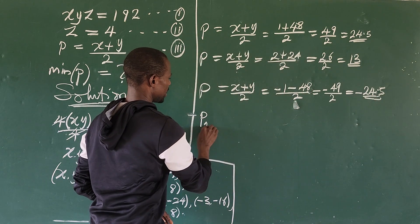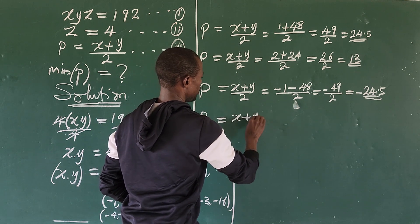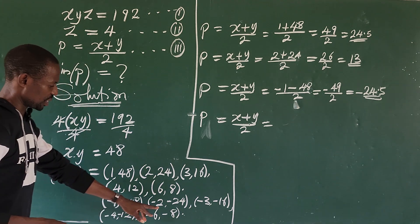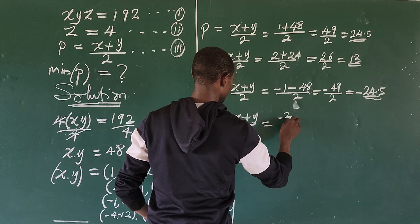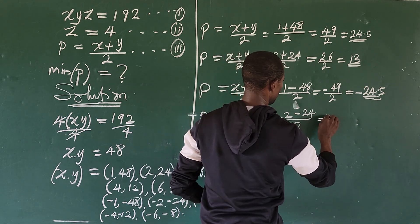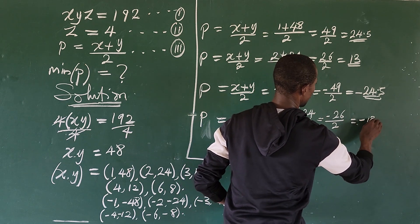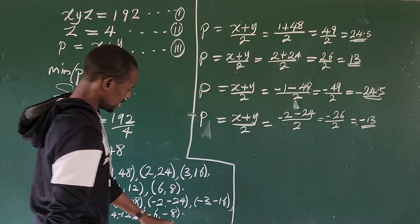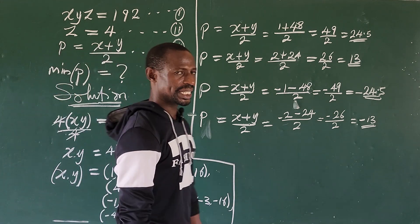Then for the next negative pair, p equals (−2 + (−24)) over 2 equals −26 over 2, which gives us −13. And the next one, (−3 + (−16)) over 2 gives us −14 over 2, which is −7.